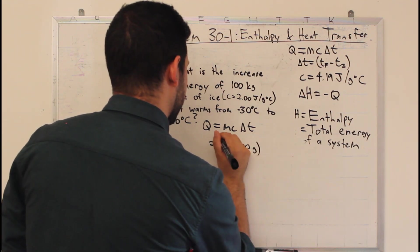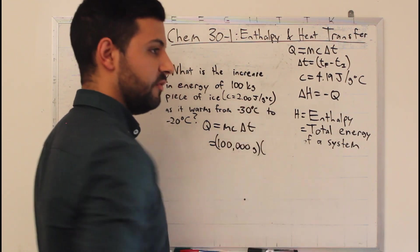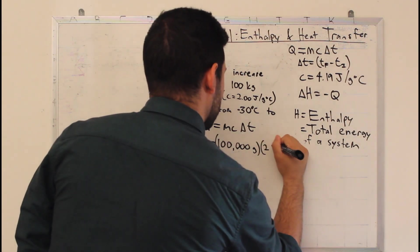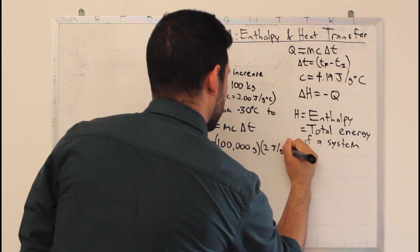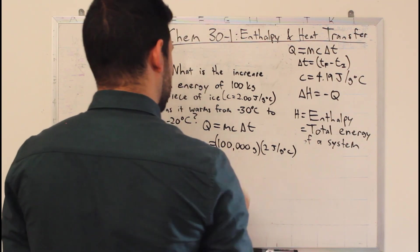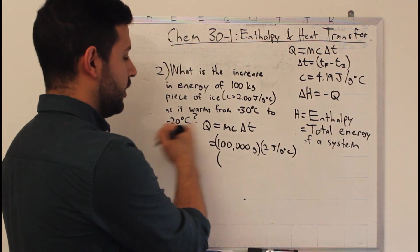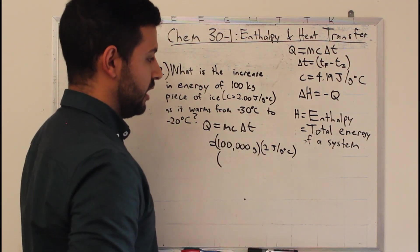So 100,000 grams times our specific heat capacity, 2 joules per gram degrees Celsius, times the final temperature, minus 20, minus the initial temperature,